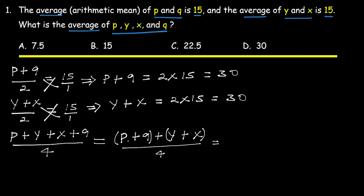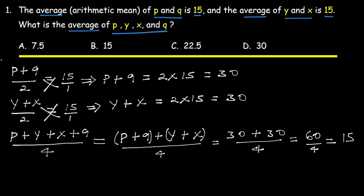So (P + Q) + (Y + X) equals 30 + 30 = 60, divided by 4. The average of P, Y, X, and Q is therefore 15.